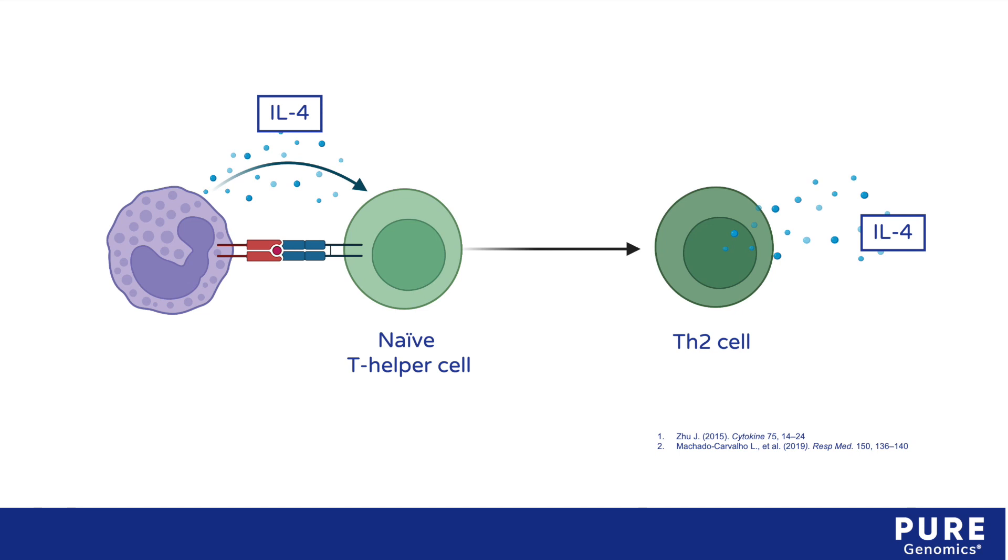IL-4 stimulates the differentiation of naive helper T cells to Th2 cells, which also produce IL-4.